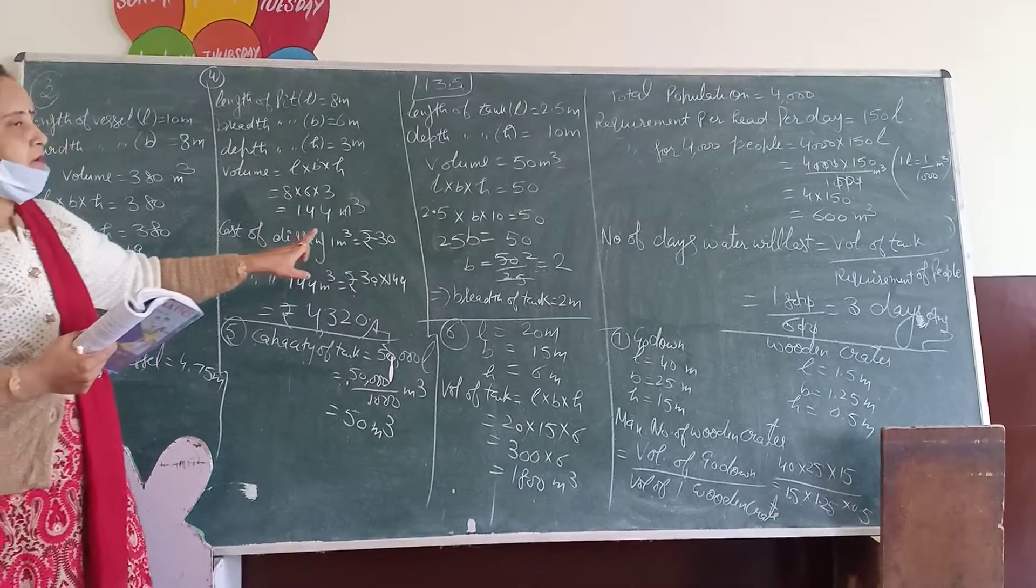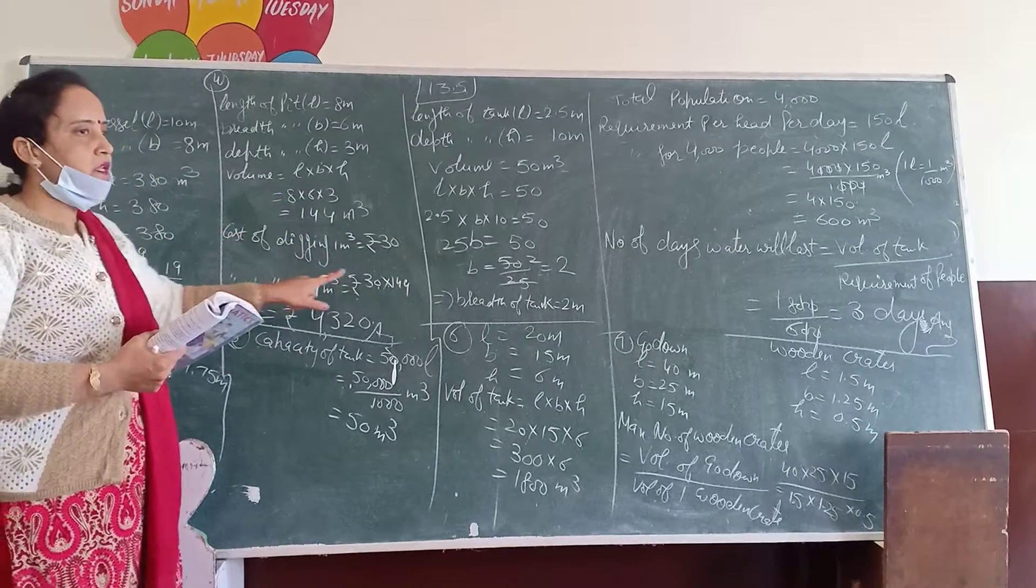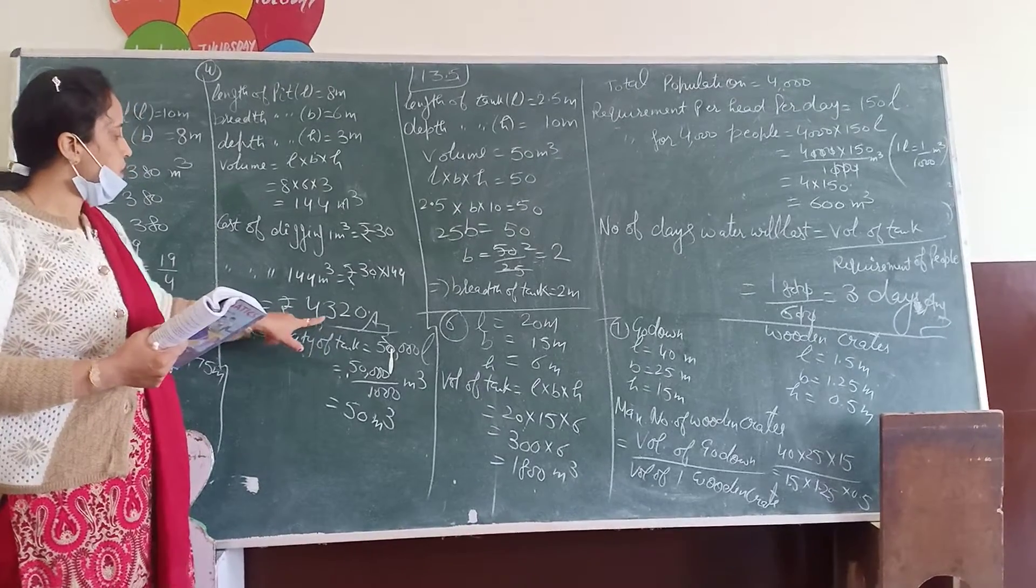Cost of the container is 30 rupees per 1 liter, so 144 into 30 equals 30 into 144. The answer is 4,320 rupees.